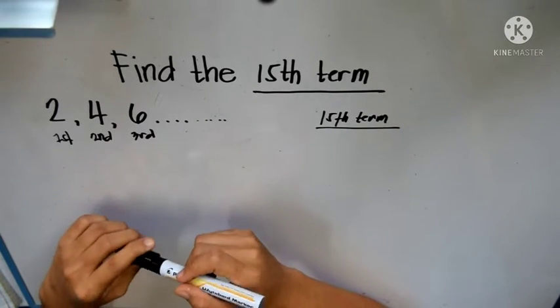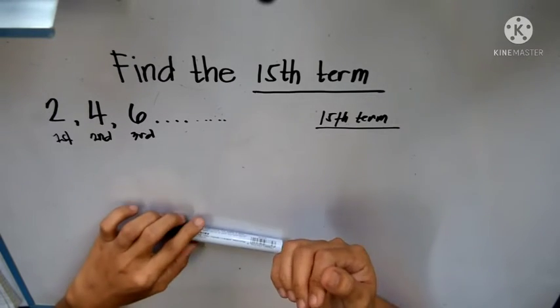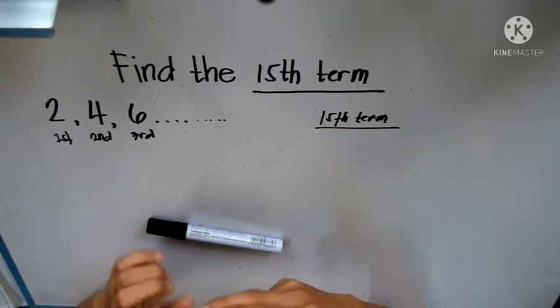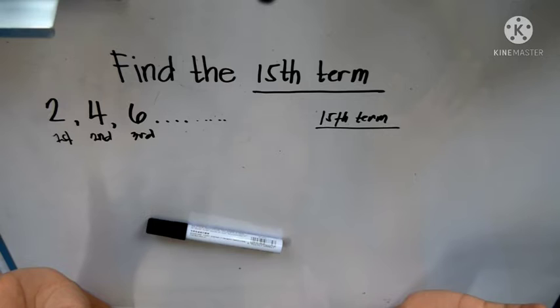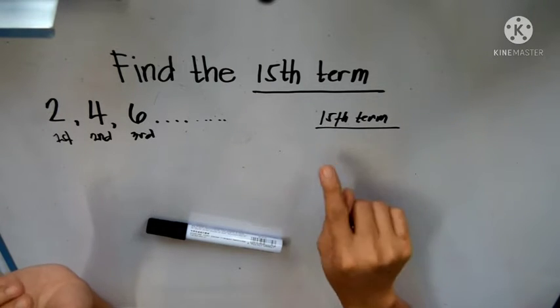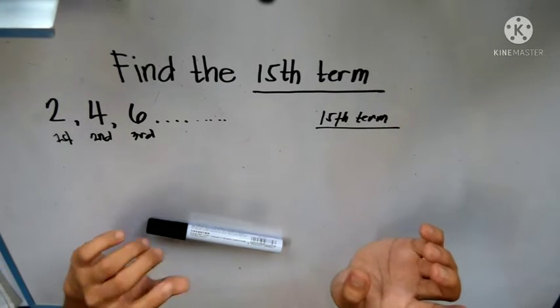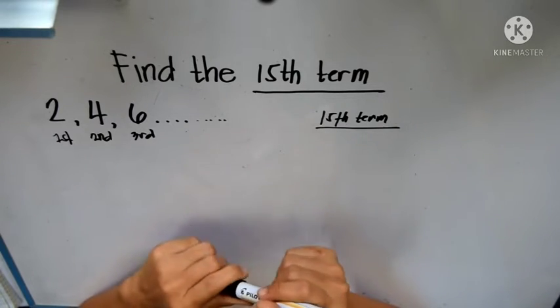We can do that by counting 2, 4, 6 and go on until we reach the 15th term. But the easiest way to do that is by using a formula.